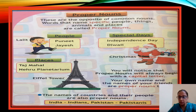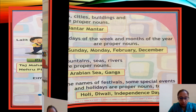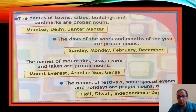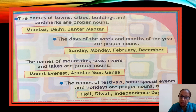The names of towns, cities, buildings and landmarks are proper nouns — for example Mumbai, Delhi, Jantar Mantar. The days of the week and months of the year are also proper nouns: Sunday, Monday, February, December — these are particular names for specific days and months, so they are proper nouns.